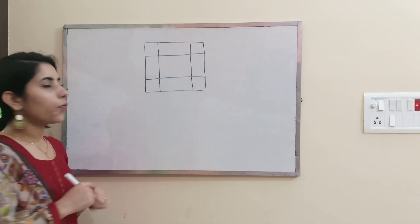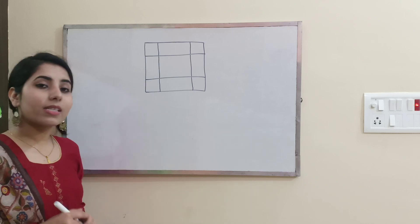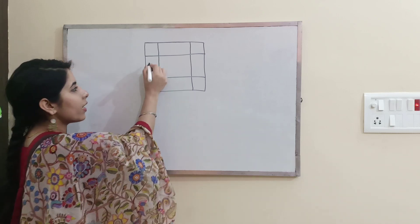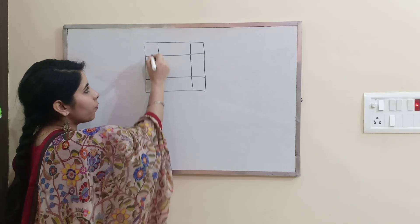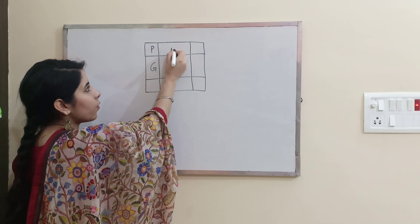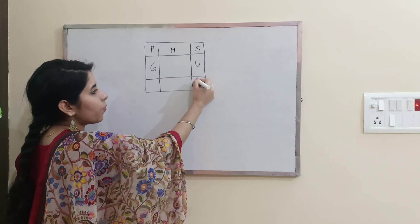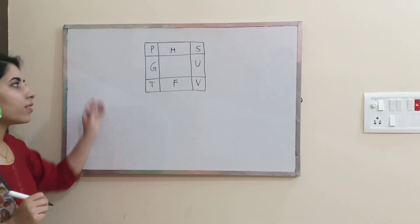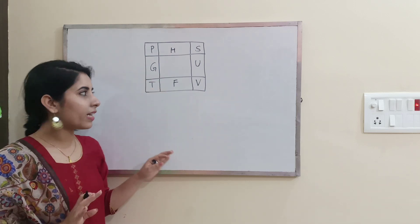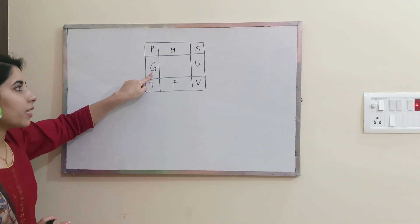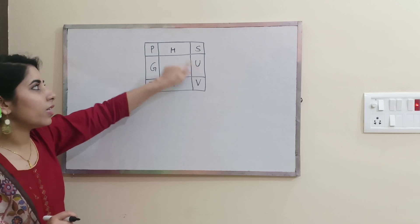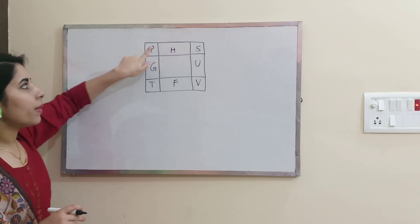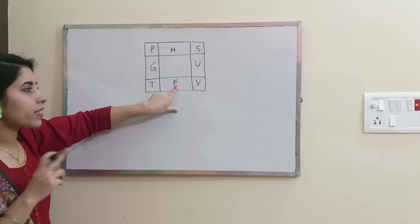To fill this diagram, the statement that will help us is: Great Physicists Have Studied Under Very Fine Teachers. Here, symbols have their usual meaning: G represents Gibbs free energy, U internal energy, H enthalpy, S entropy, P pressure, V volume, Helmholtz free energy is F, and T is temperature.